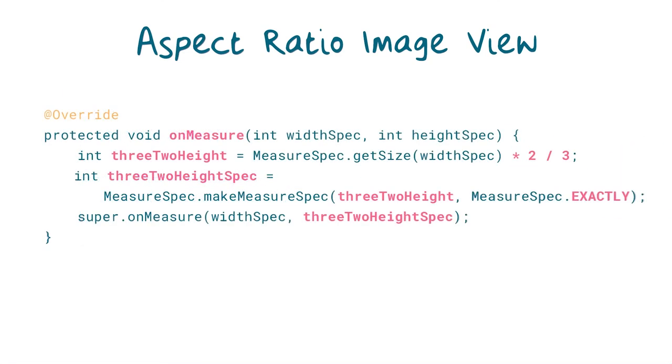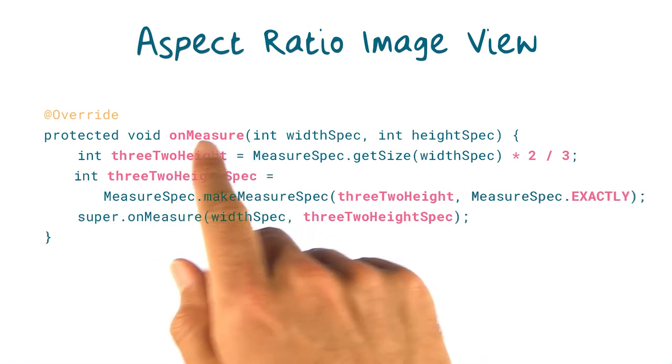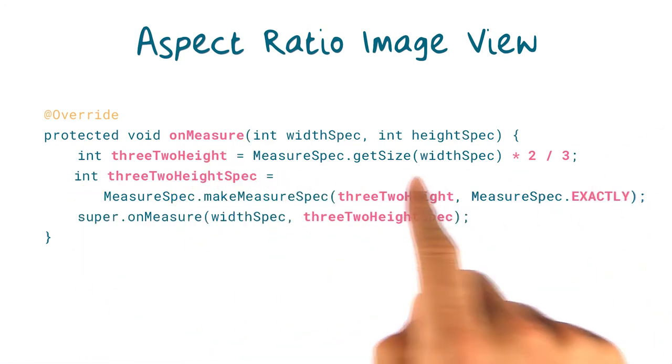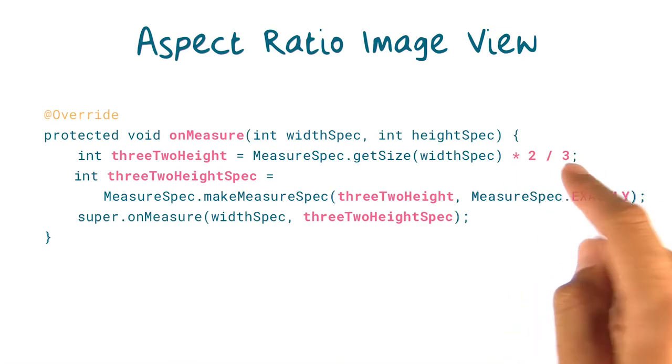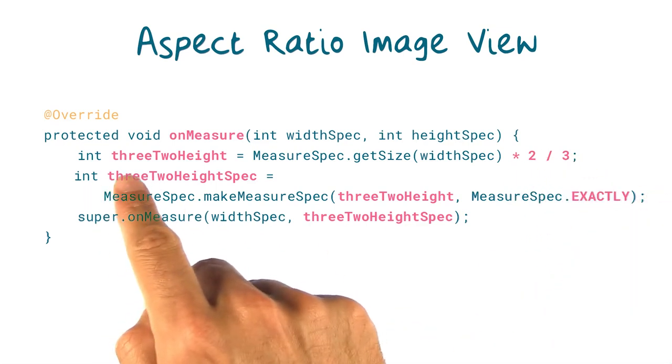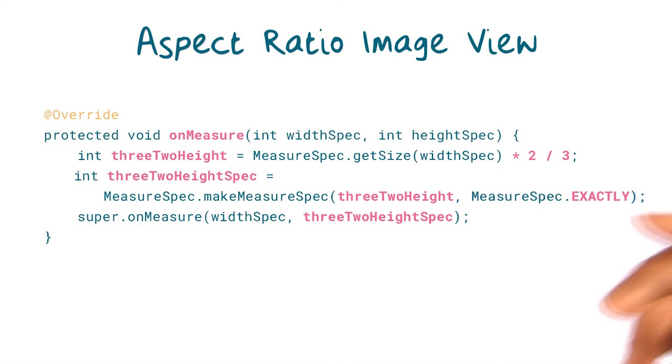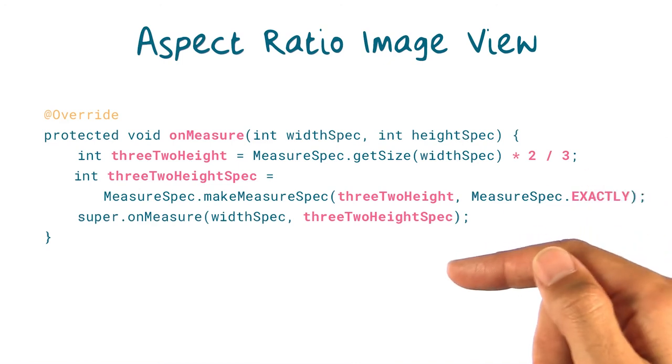Now the key part: let's override the onMeasure method. We'll unpack the width we're given and then calculate two-thirds of this as the 3:2 height. We'll then say that our view's height wants to be exactly that two-thirds of the width height. We then pass these on to the superclass to handle the rest of the measurement pass.